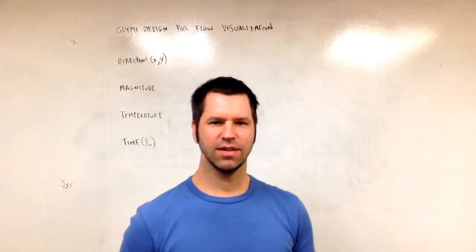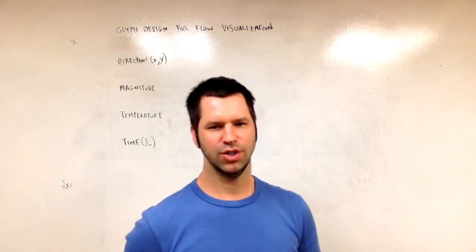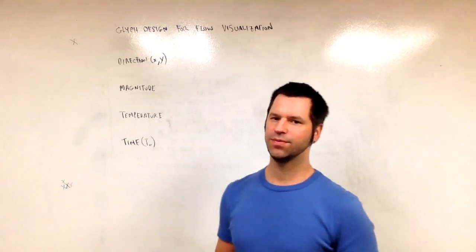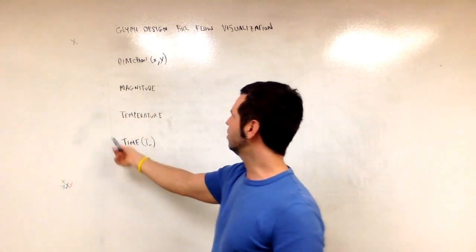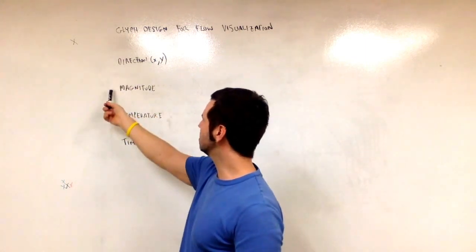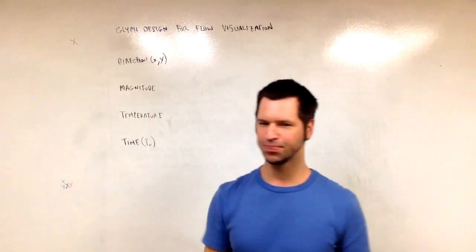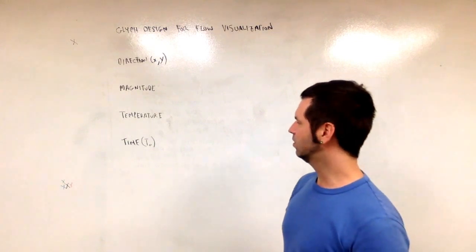Fusia asked about glyph design for flow visualization. In particular, how could we design a glyph to visualize all of these variables? So we have direction, magnitude, temperature, and time. And this is non-trivial, I would say.